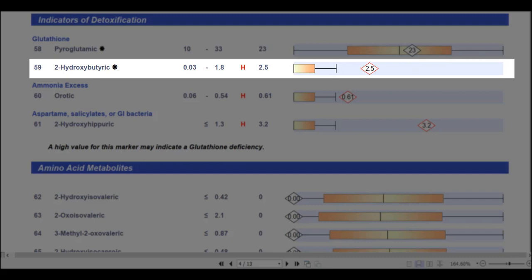2-hydroxybutyric acid, this is another marker related to detoxification, and when it's elevated, it's a byproduct of the breakdown of the sulfur amino acid metabolite, cystathionine, which may occur during oxidative stress or increased toxic exposure. While an elevated 2-hydroxybutyric might indicate a glutathione deficiency, it could also relate to problems with methylation.